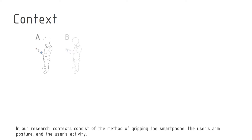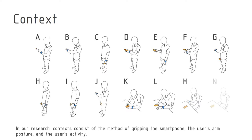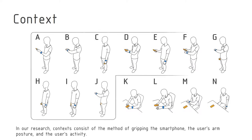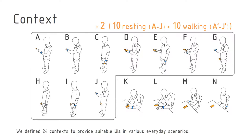In our research, context consists of the method of gripping the smartphone, the user's arm posture, and the user's activity. We defined 24 contexts to provide suitable UIs in various everyday scenarios.